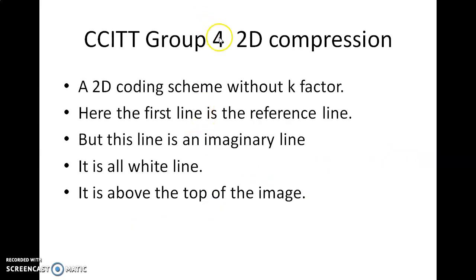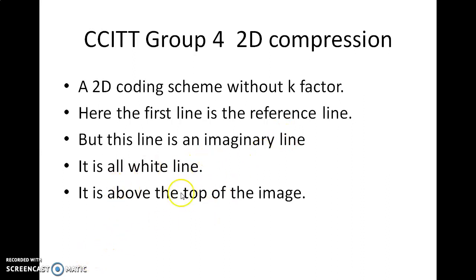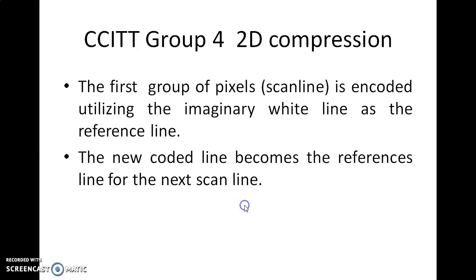Next is Group 4 2D compression — a 2D coding scheme without a K factor. In Group 3 we used a K factor; here there is no K factor. The first line is the reference line, but it is an imaginary all-white line considered to be above the top of the image.